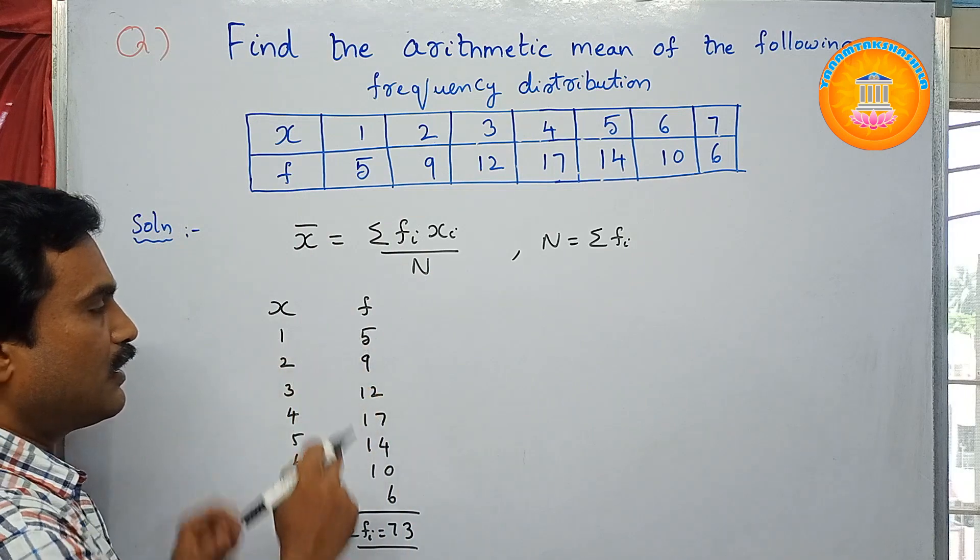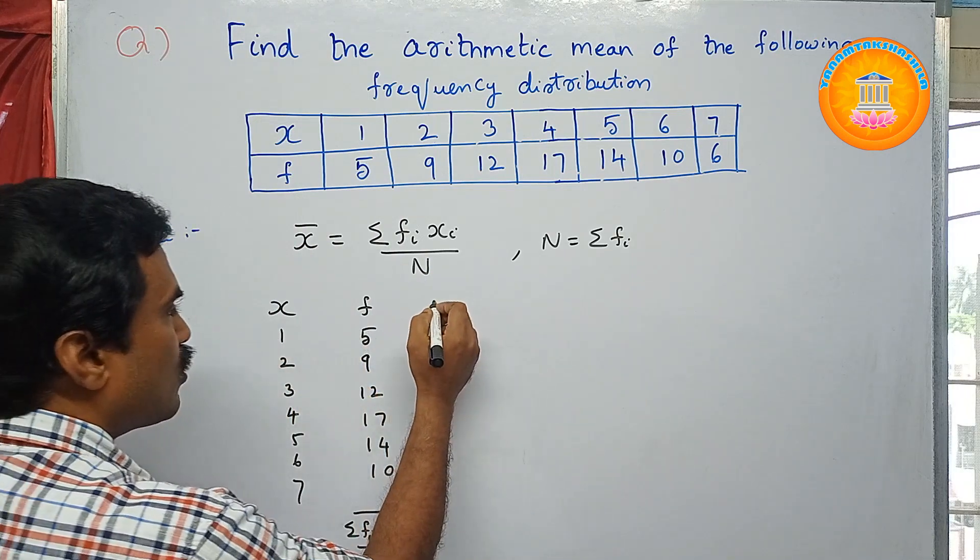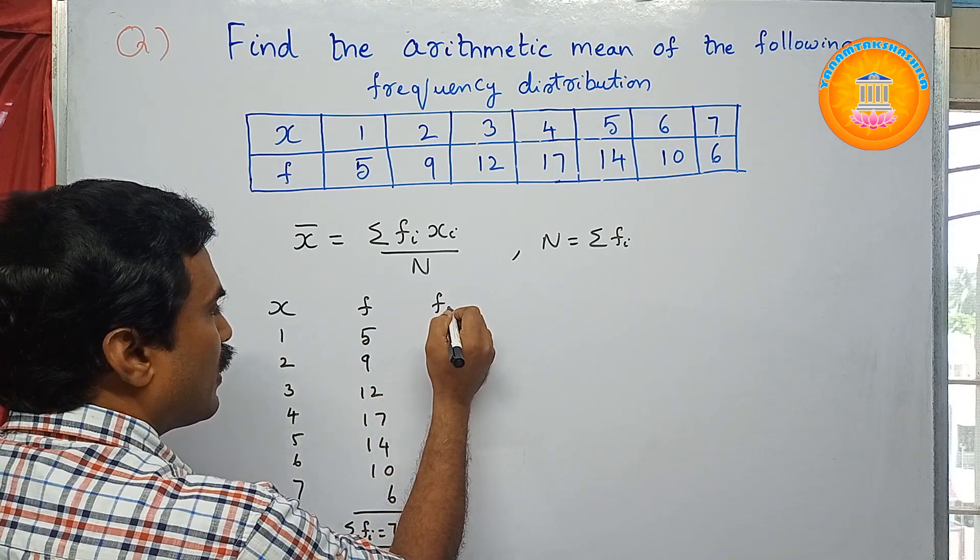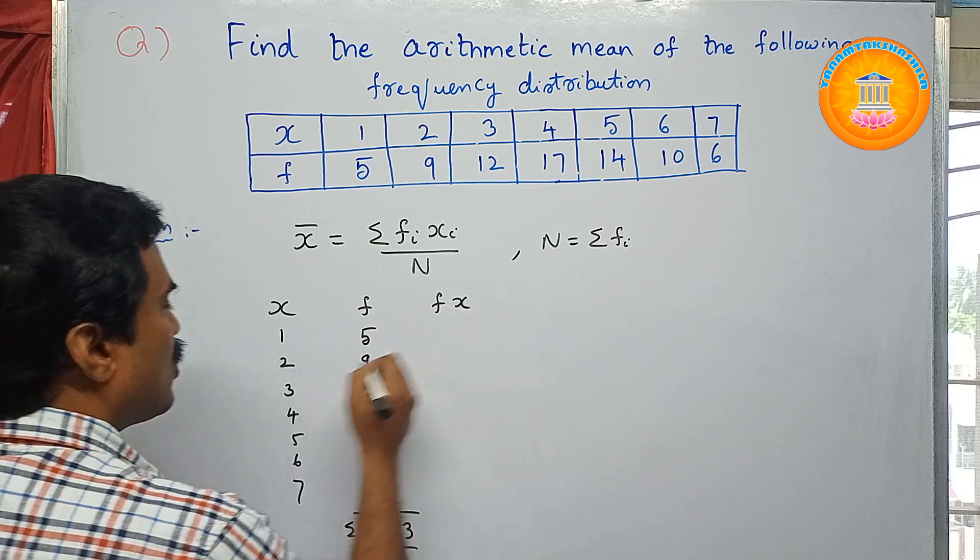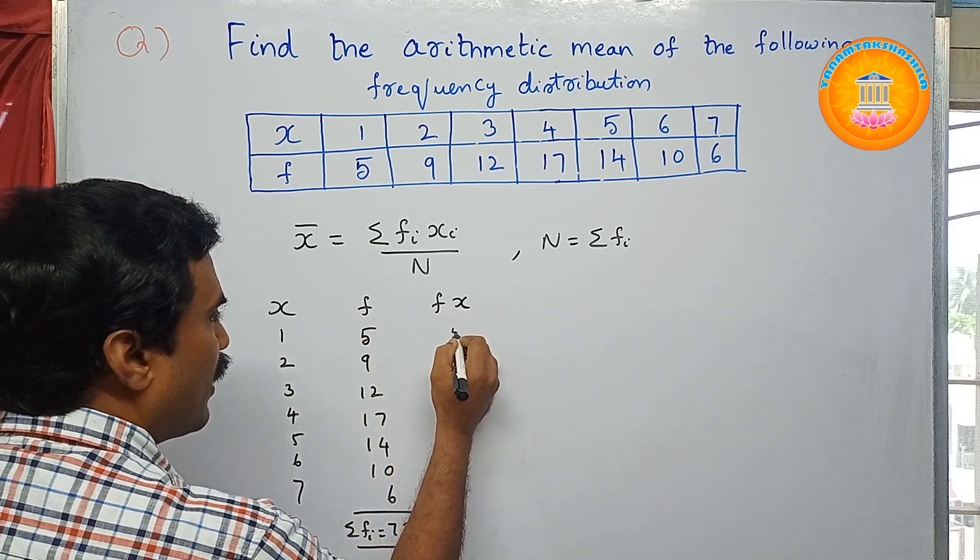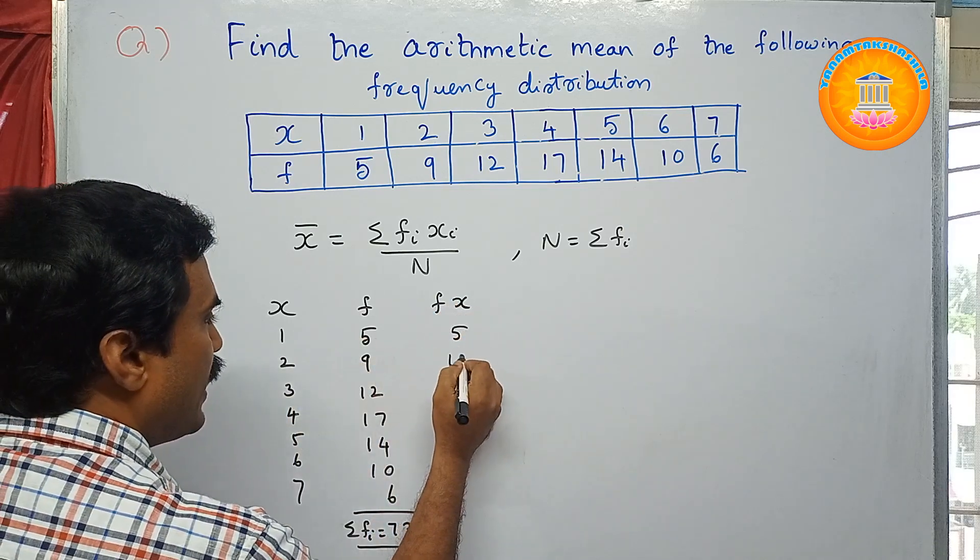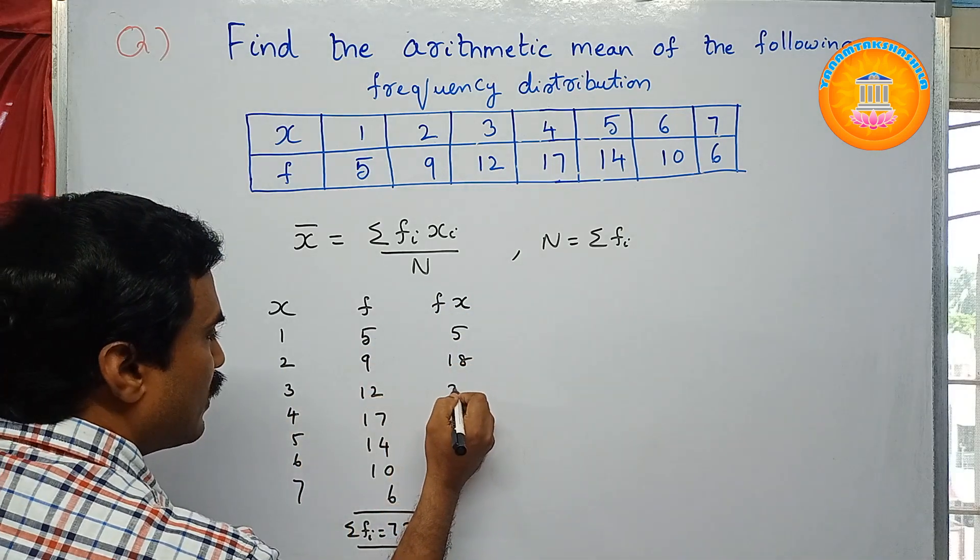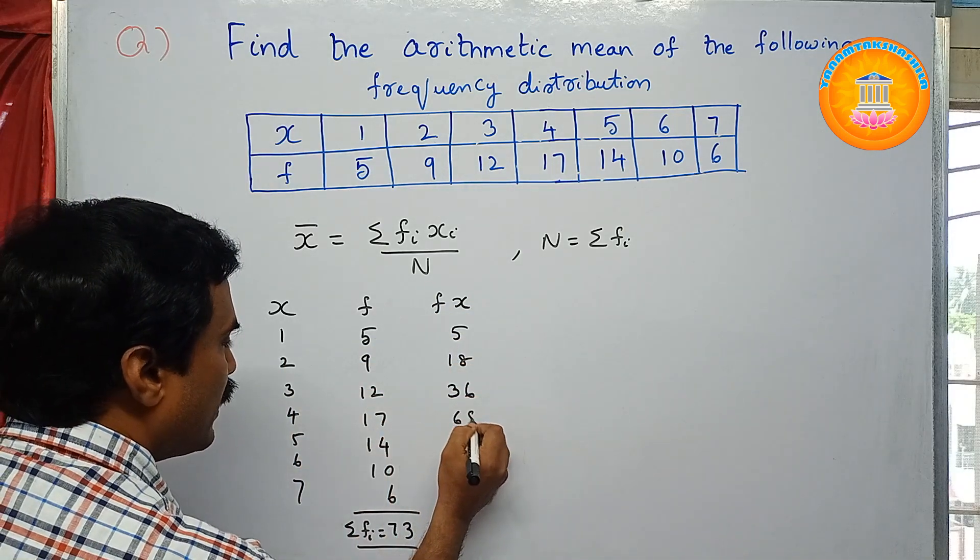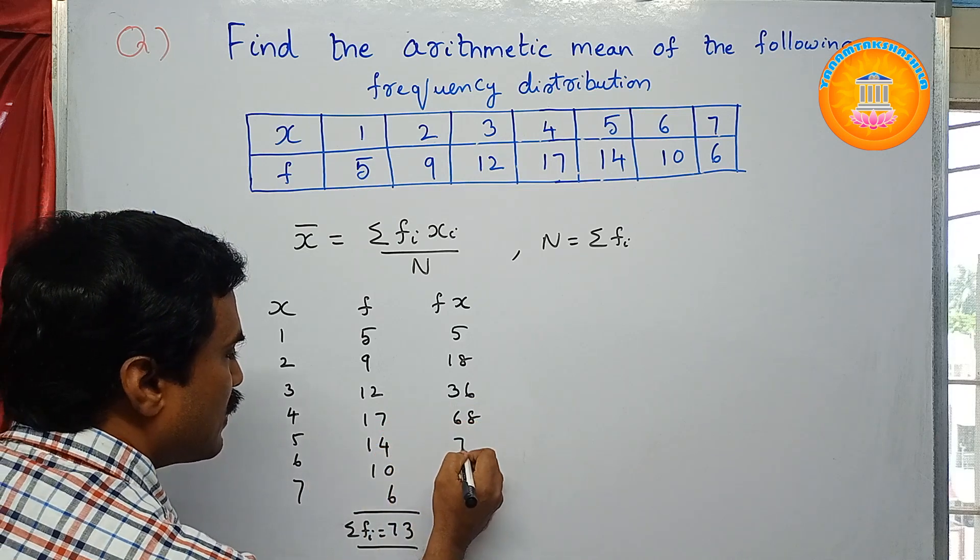Next thing you need to get f_i times x_i, that means you need to multiply this X and f corresponding values. So here you will write fx. 1 into 5 is 5, 2 into 9 is 18, 3 into 12 is 36, 4 into 17 is 68, and 5 into 14 is 70.